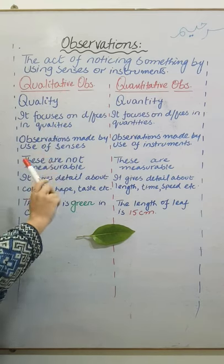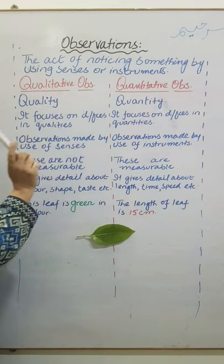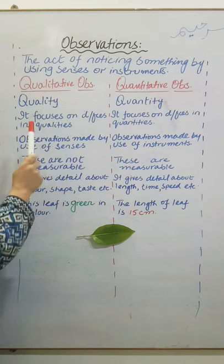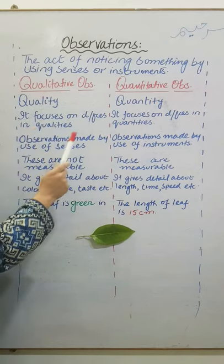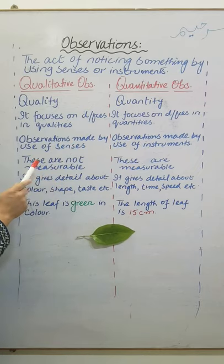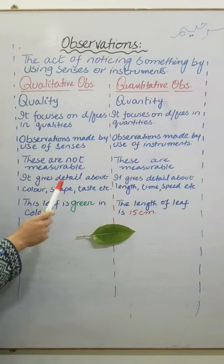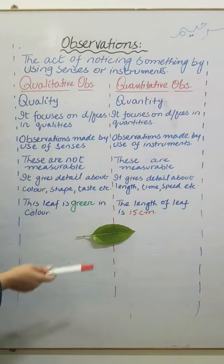Qualitative and quantitative. Qualitative observation tells us about the quality. It focuses on differences in qualities. These observations are made by use of senses, are not measurable, and give details about color, shape, taste, etc. For example...